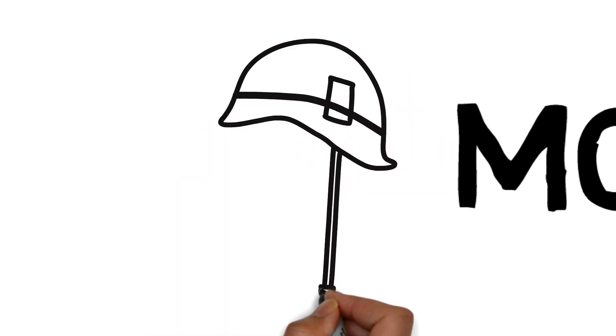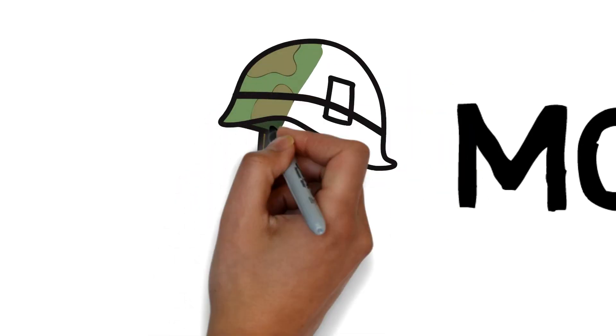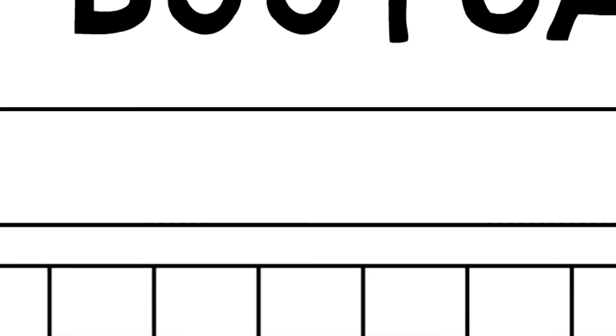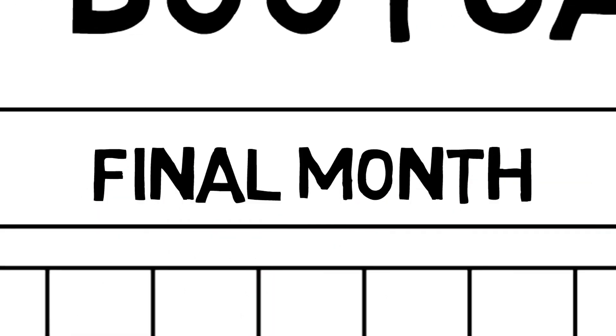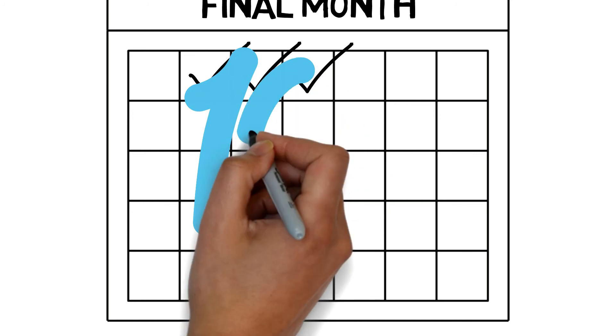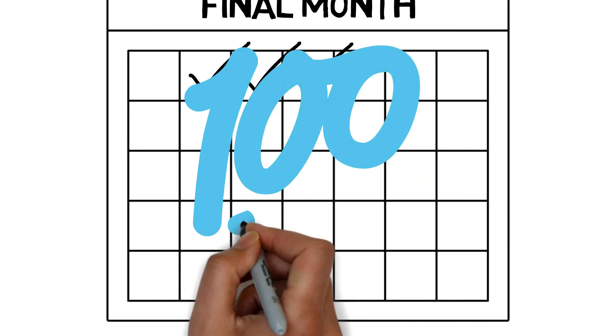Once you have finished all 10 content modules, you will start the final module, MCAT Bootcamp. MCAT Bootcamp requires you to take two practice exams per week and takes place during your final month of MCAT studying. During this month, you will also review everything you learned during the content modules one last time. It is hard work, but will leave you feeling 100% ready and confident for test day.